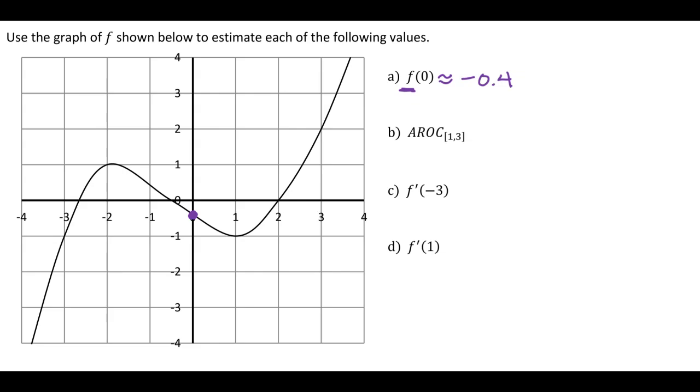Next question: what is your average rate of change from 1 to 3? Average rate of change is slope of a secant line, so I need to go about like this close enough, which gives me a run of 2 and a rise of 3. So my average rate of change is 3/2, or 1.5.